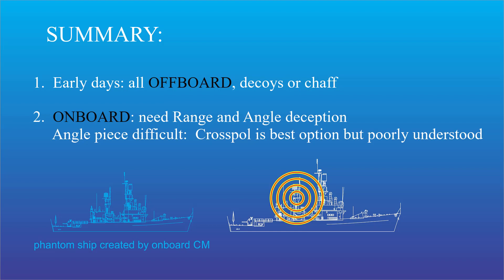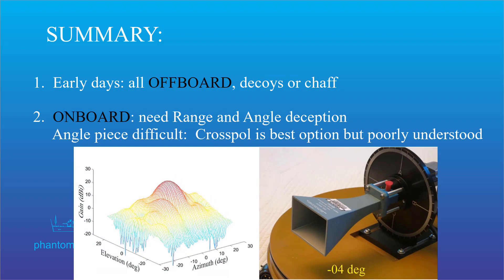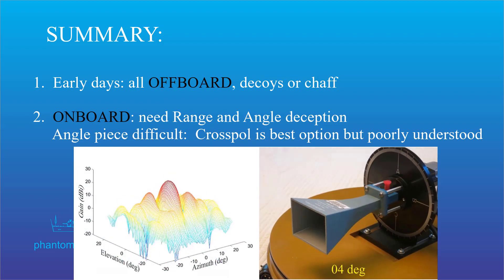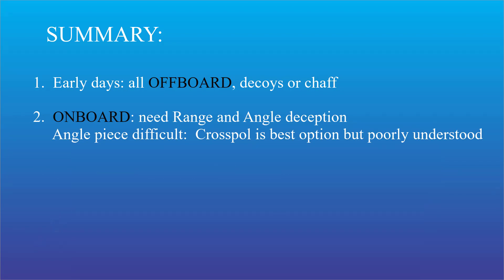Now there are a few options for onboard angle deception. Perhaps the best one being cross-polarization jamming, which was poorly understood. Point three. Phased array antenna showed up about this time which offered the perceived multi-threat capability, but for practical reasons it ruled out cross-pole jamming.